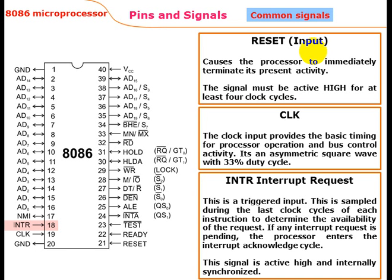INTR is the interrupt request — a trigger input sampled during the last clock cycle of each instruction to determine the ability to handle the request. If any interrupt request is pending, the processor enters an interrupt acknowledge cycle. This signal is active high and must be synchronized. NMI is the non-maskable interrupt.